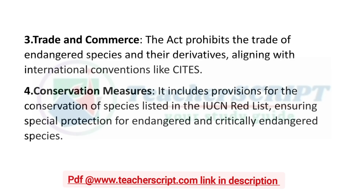Conservation measures: The act includes provisions for conservation of species listed in the IUCN Red List, ensuring special protection for endangered and critically endangered species. The IUCN — International Union for Conservation of Nature — prepares lists of extinct and endangered species, conducting surveys and statistics on animals like tigers and elephants that are on the endangered list.